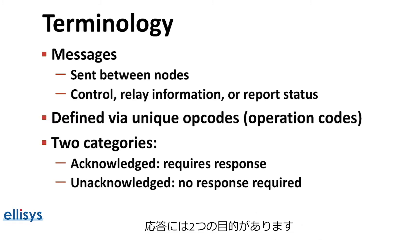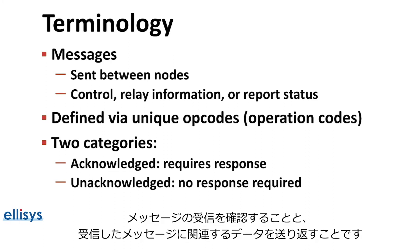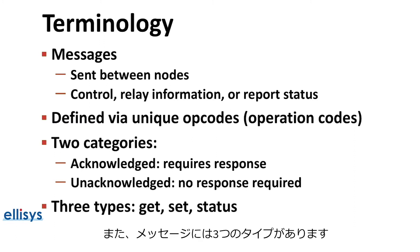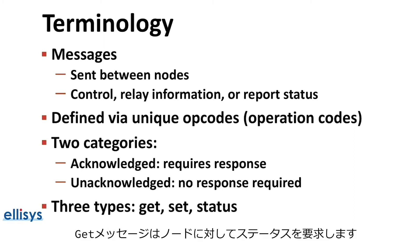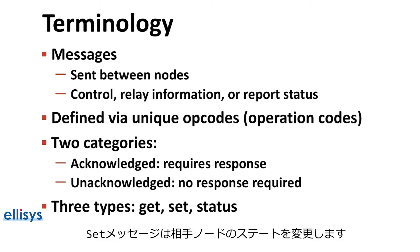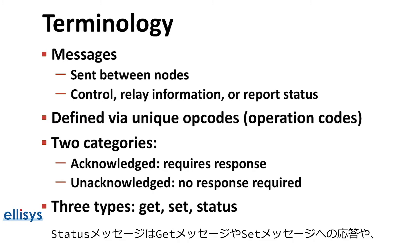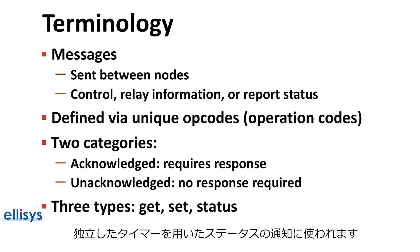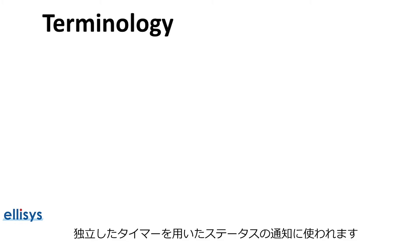Responses serve two purposes: they allow confirmation of receipt of the message, as well as sending back data related to the message that was received. There are three types of messages: get messages, which request a state from a node; set messages, which change the value of a given state; and status messages, which serve as responses to a get or set message, or are simply triggered independently via a timer.